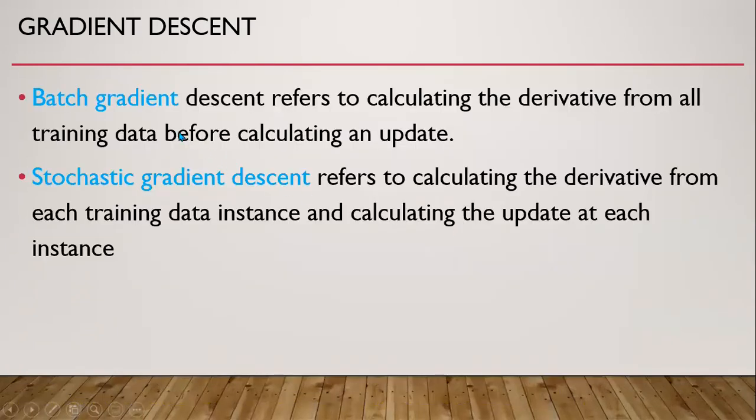There are two types of gradient descent in machine learning. One is batch gradient descent, which refers to calculating the derivative from all training data before calculating an update. In stochastic gradient descent, we calculate the derivative from each training data instance and calculate the update at each instance.